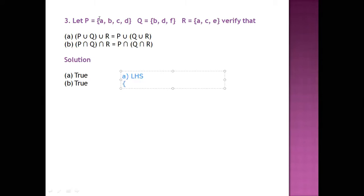P union Q will be written as {A, B, C, D, F}. Then in the LHS we have to take its union with R. R is {A, C, E}.